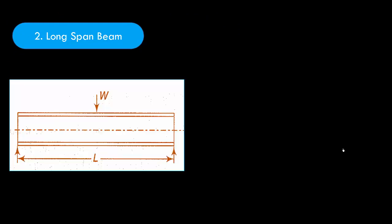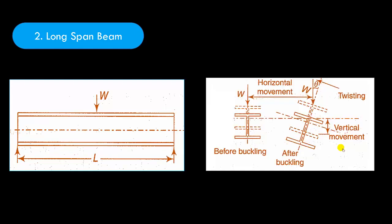For a longer span beam, lateral torsional buckling occurs. Considering any cross-section of this beam, initially it is in the dotted position, but it shifts downward, moves laterally, and also rotates. So three things happen simultaneously: vertical shifting, horizontal shifting, and twisting.